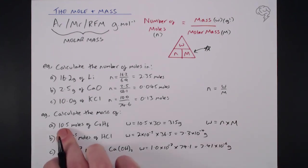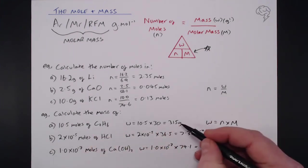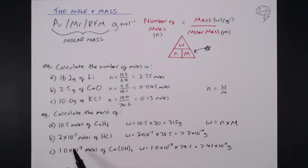Okay so we have 10.5 moles multiplied by the MR of this is ethane here C2H6 which is 30 which gives us 315 grams. 10 moles is quite a lot so we're expecting quite a high mass here. Of course in these two we're dealing with very small amounts, 2 times 10 to the minus 5 moles and 1 times 10 to the minus 7 moles.